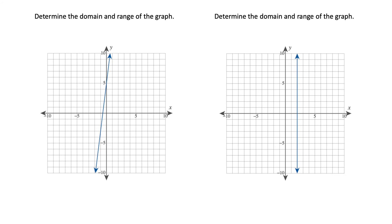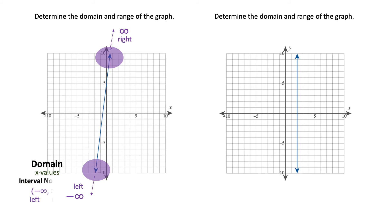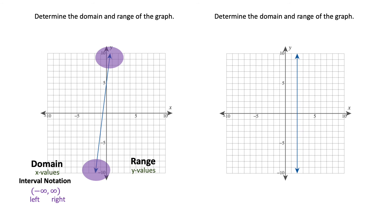For the left graph, let's start with the domain, thinking about x values. The arrows indicate left and right behavior on this graph — it will approach negative infinity in a leftward direction and positive infinity in a rightward direction. You can express that as all real numbers or use the interval negative infinity to positive infinity. For the range, which includes y values, those same arrows are also pointing up and down. The bottom of the graph approaches negative infinity and the top approaches positive infinity, so the range is also all real numbers, or negative infinity to positive infinity.